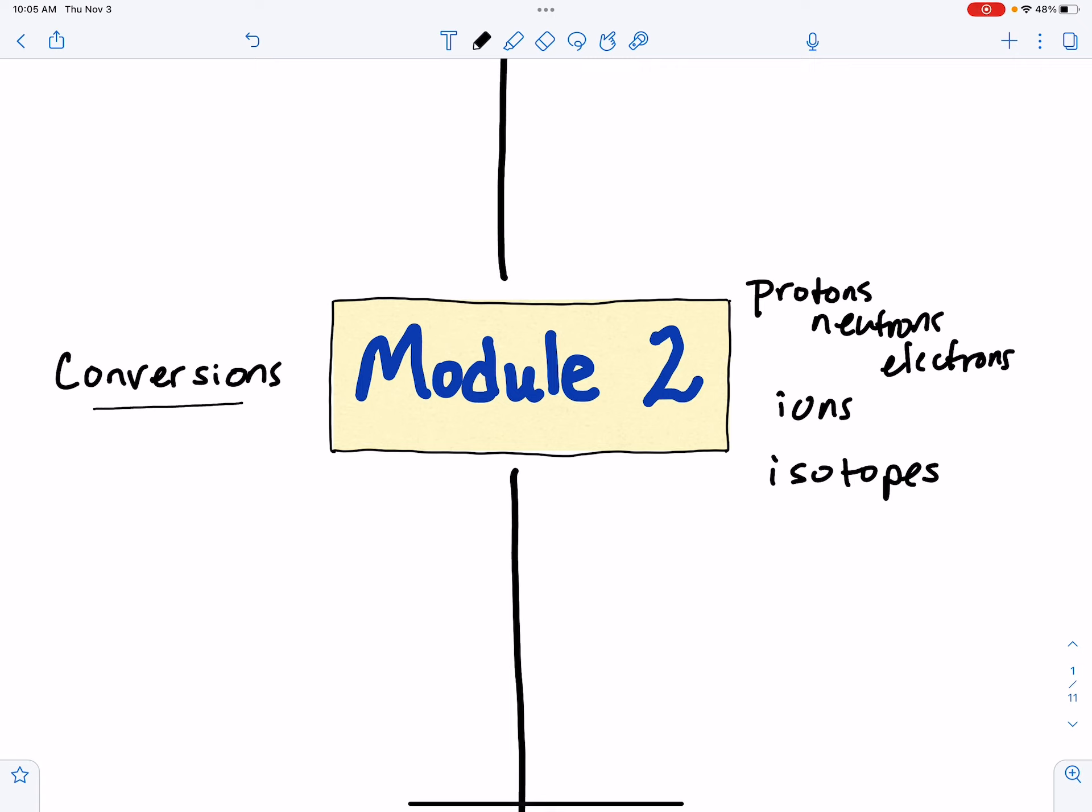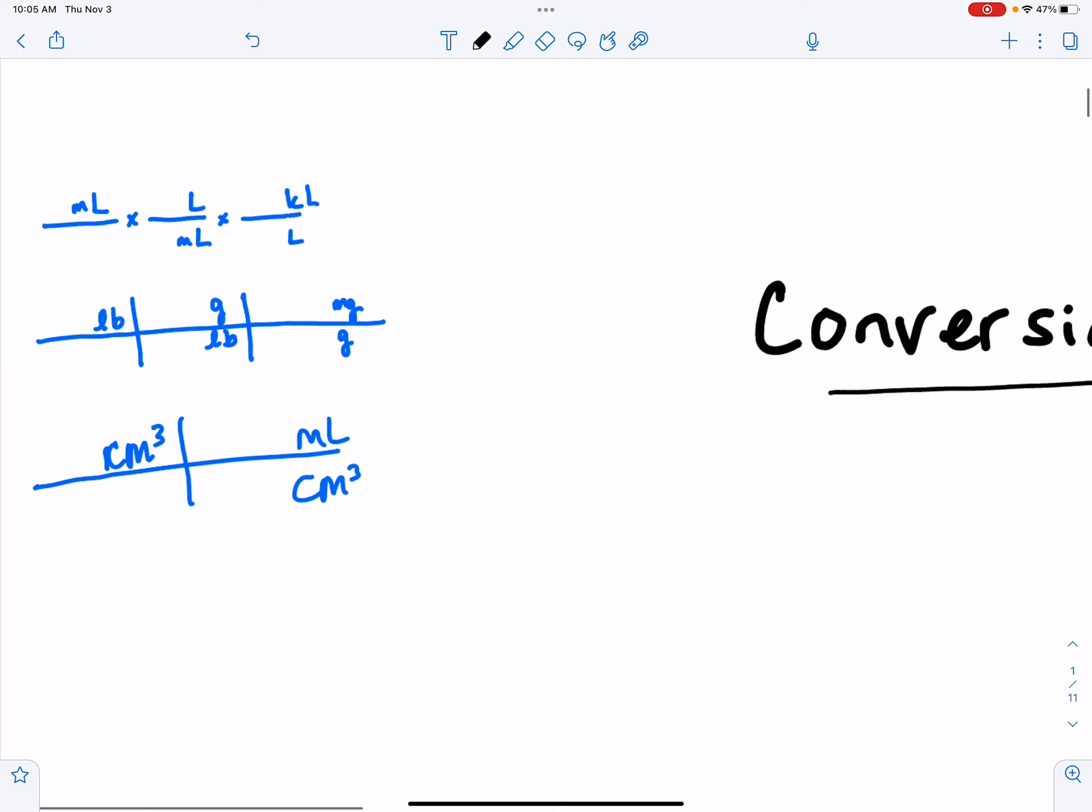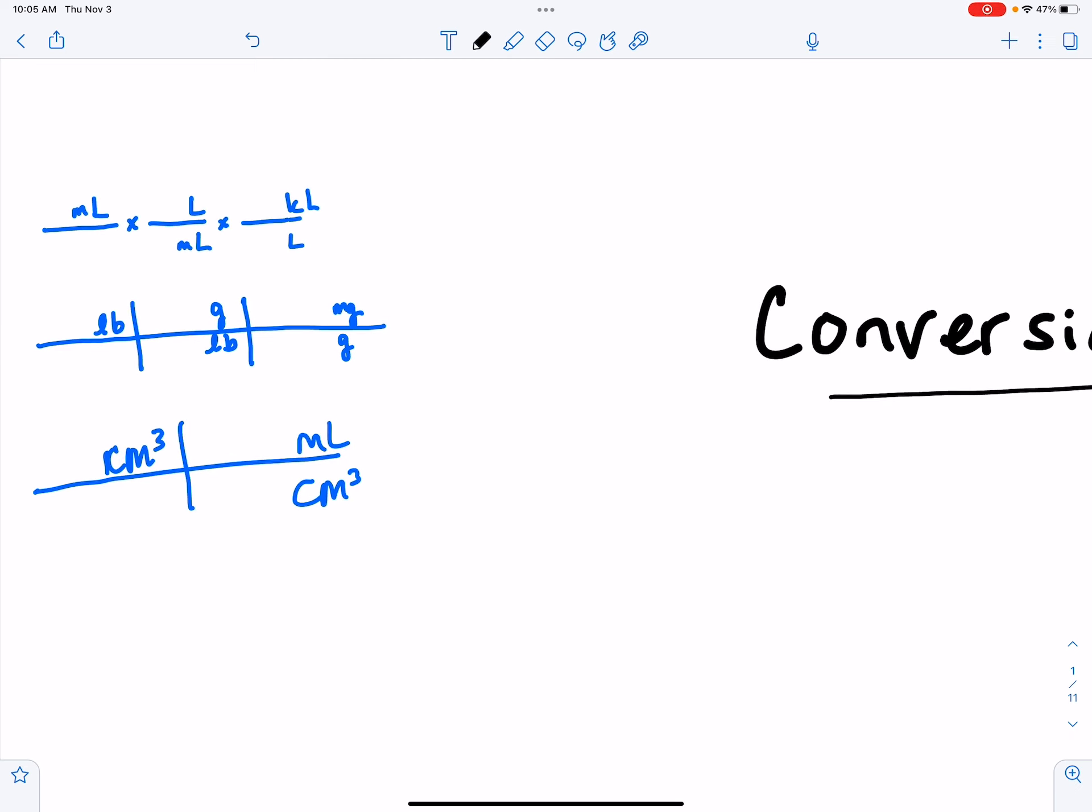Now, you want to really put a lot of time and effort into this because there's a certain method to how we do math in chemistry. It's a very visual method, and it's a concept of having units that are the same match diagonally.